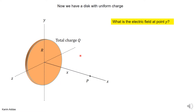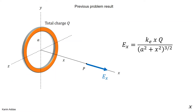So how would you approach this problem? Think of the disk as consisting of many rings. If you get the electric field due to each ring and then sum over all the rings, that will give you the electric field due to the disk. To solve the new problem, let's look at the previous problem and the result we got.